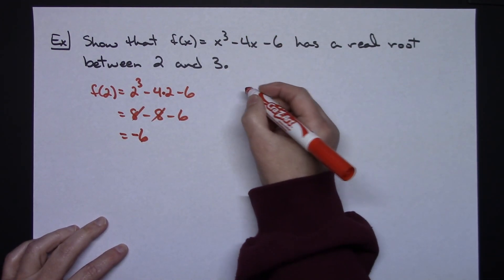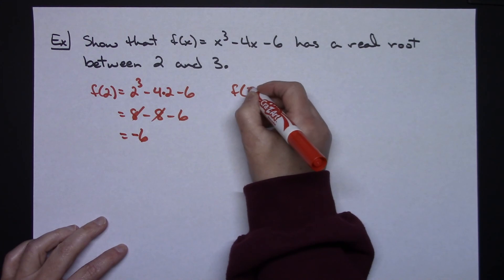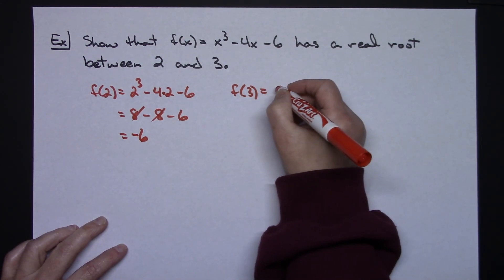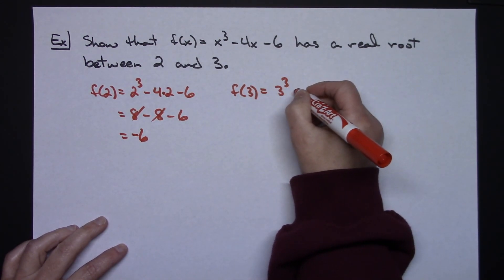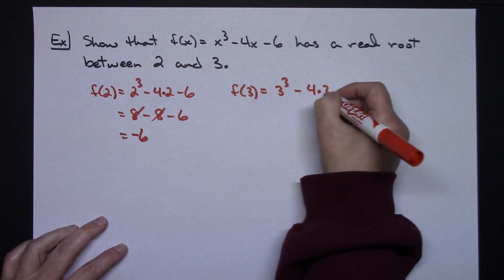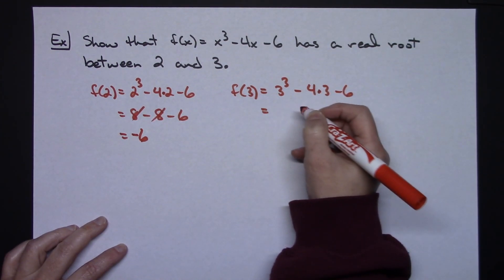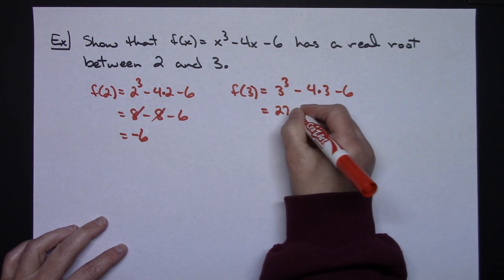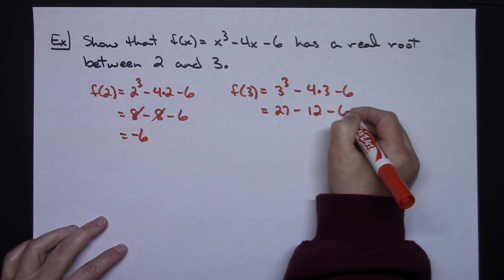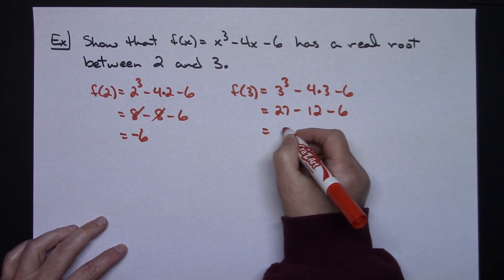Then I would want to plug in my 3. Plugging 3 into F, I would have 3 cubed minus 4 times 3 minus 6. Doing a little bit of arithmetic here, 27 minus 12 minus 6, that's going to give me a 9.